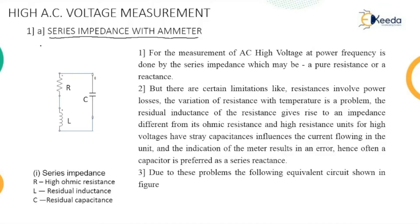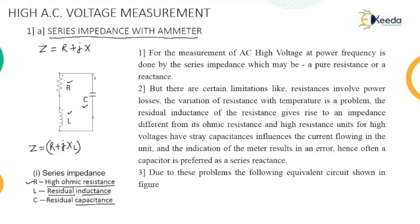Impedance means a combination of resistance and reactance. In this circuit, a resistor and inductor are connected in series, and the series combination is connected in parallel with the capacitor. The resistance is referred to as a high ohmic resistor; L and C are the residual inductance and capacitance respectively. So impedance Z is the combination of R and XL connected in series, giving R + jXL, connected in parallel with −jXC.